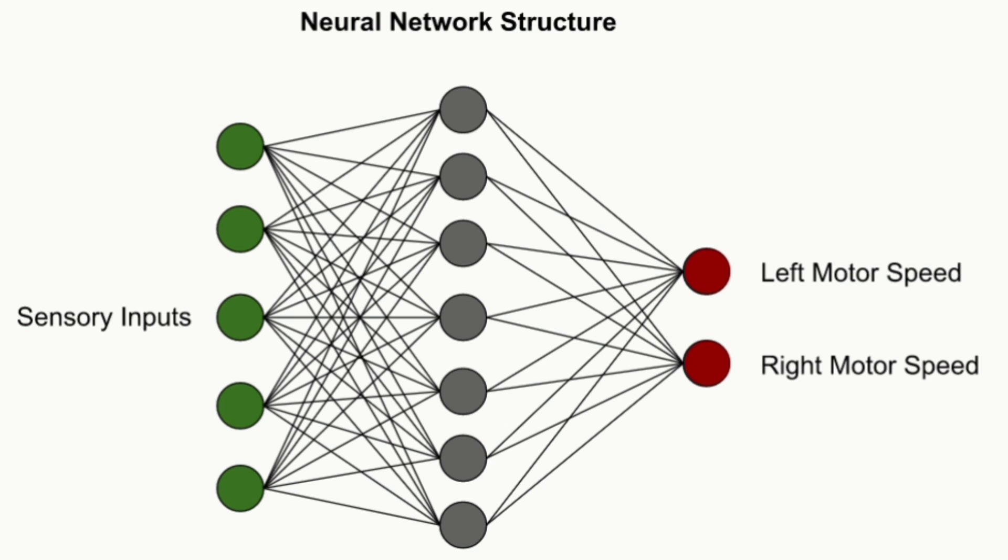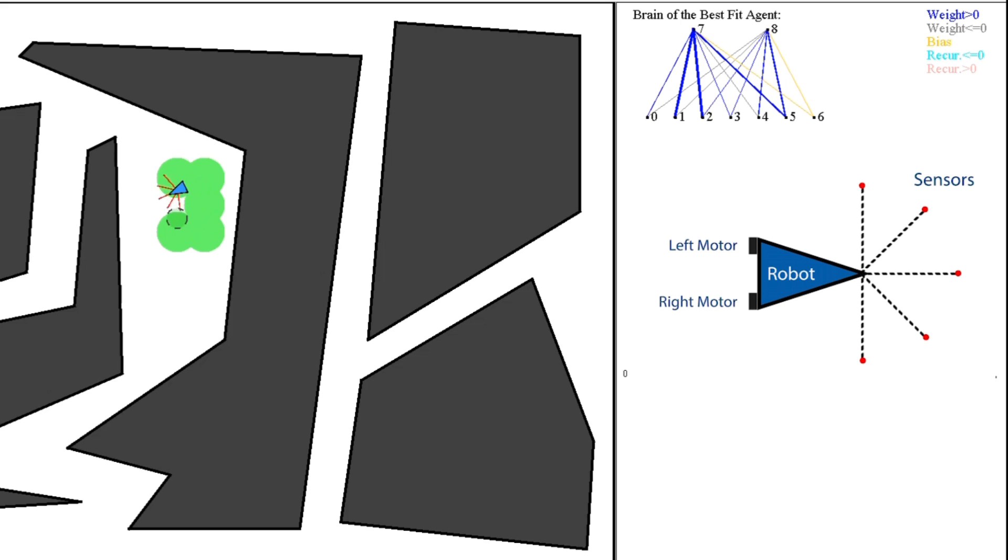The input nodes of the neural network are the agent's sensory values and the output nodes control the force applied to its left and right motors. The weight of connections determines the impact of each sensor on the agent's movement. The process of learning involves adjusting the weight and structure of connections in the neural network.